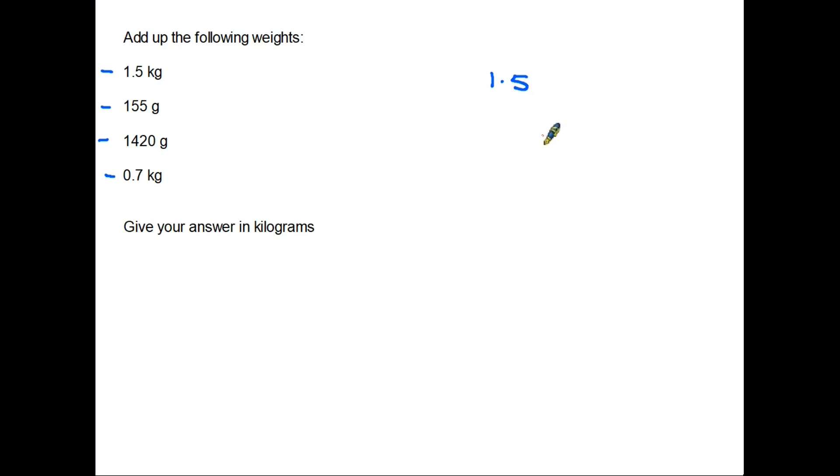So the top one is already in kilograms, so we can leave that exactly as it is. But the 155 grams - in order to convert into kilograms, we are going to have to divide by 1000. And the answer to that is 0.155, so that is the equivalent in kilograms.